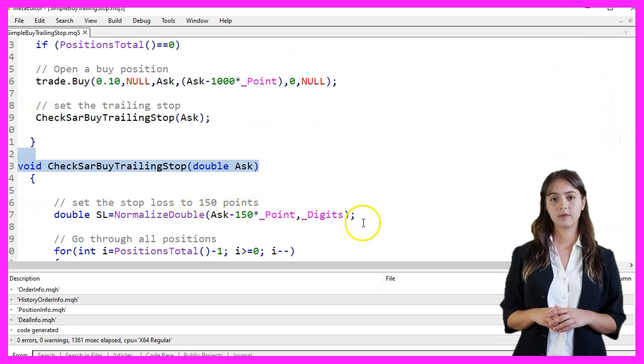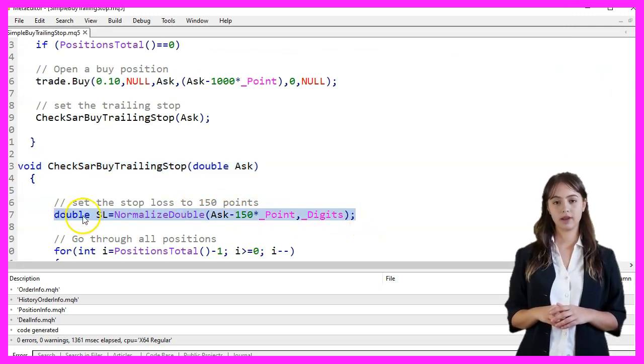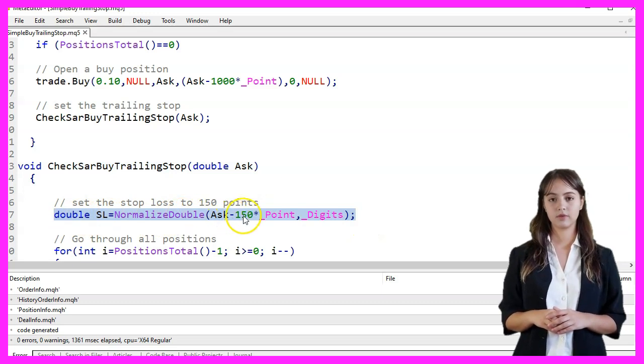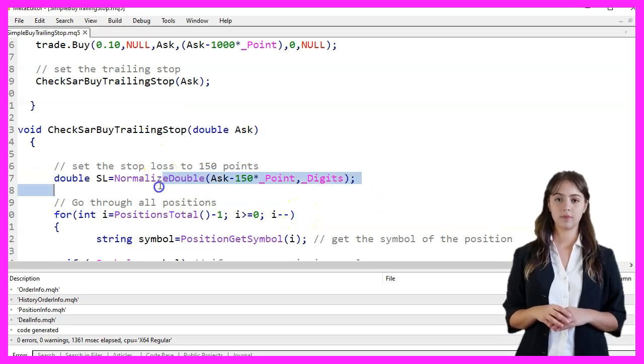Inside the ChexarBuyTrailingStop function, we set the initial stop loss to 150 points below the AskPrice. We use NormalizeDouble to ensure the stop loss value is formatted correctly.